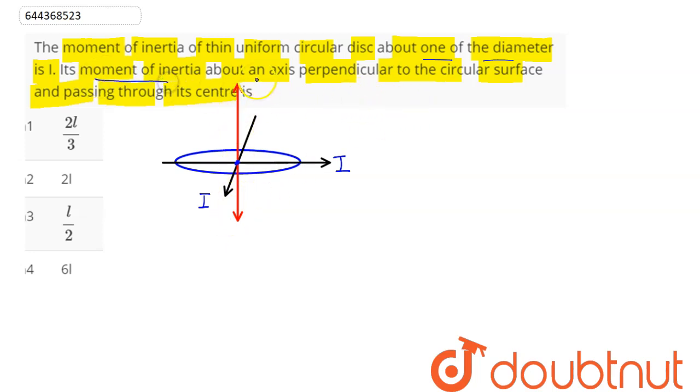Here it is asking moment of inertia about an axis perpendicular to the circular surface and passing through its center. Since these two diametrical axes are here passing through the center of mass as well as lying in its plane.